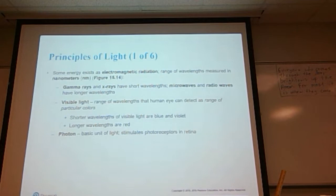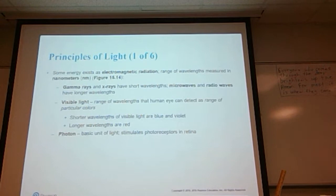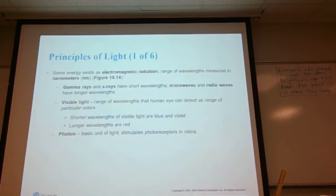Some energy exists as electromagnetic radiation. The range of those wavelengths are measured in nanometers — these are the principles of light. Gamma rays and X-rays have short wavelengths; microwaves and radio waves have longer wavelengths. The visible light spectrum is the range of wavelengths that the human eye can detect as a range of particular colors — think of the colors of the rainbow. Shorter wavelengths of visible light are blue and violet; the longer wavelengths are red. The basic unit of light is referred to as a photon.